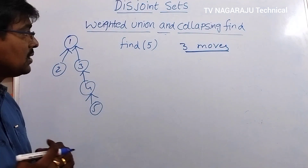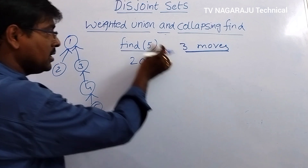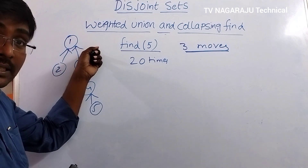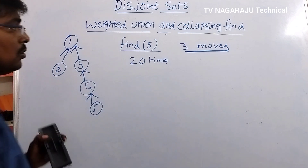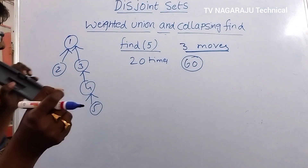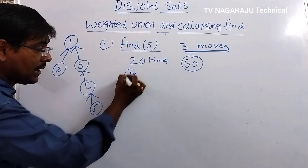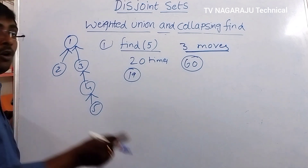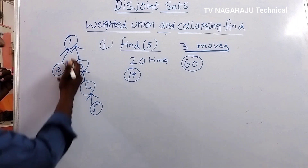Suppose the operation is to perform find(5) 20 times. For the first time you need 3 moves. For the second time also 3 moves. For the third time also the same procedure. That means for all 20 times you repeat the same traversal. What collapsing does is: once you perform a find operation, in the next time onwards there is no need to traverse the entire path.